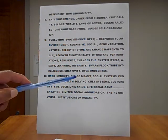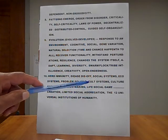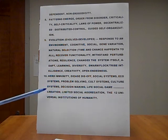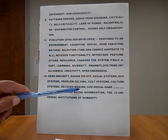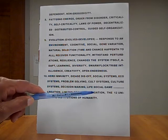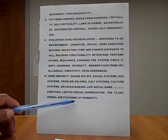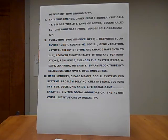Number ten, herd immunity. Disease die-off. Life, social systems, eco-systems, problem-solving, cult systems, culture systems, decision-making, life-social game creation, limited social aggregation, the 12 universal institutions of humanity, and many more. Many more. Not written here.